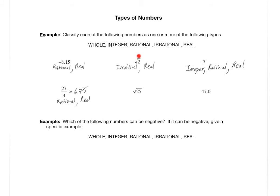Square root of 25 — be careful. Just because you see a square root, don't automatically assume it's irrational. Remember we want the simplified version: square root of 25 is actually just 5. So 5 is not irrational at all — its decimal expansion is 0.0. So square root of 25 simplifies to 5, which is a whole number, an integer, a rational number, and real — four classifications. General rule: if the square root is of a non-perfect square like 2, the result is irrational. If it's of a perfect square like 25, it simplifies to a non-negative integer and is whole, integer, rational, and real.